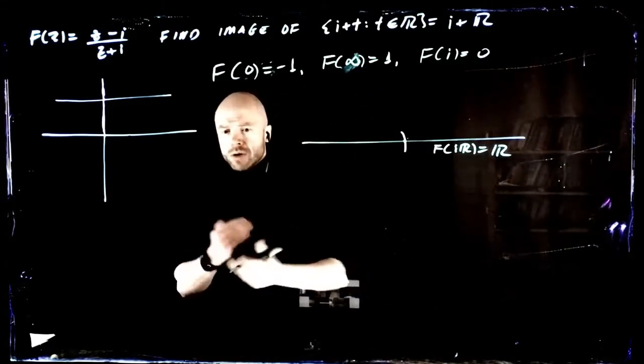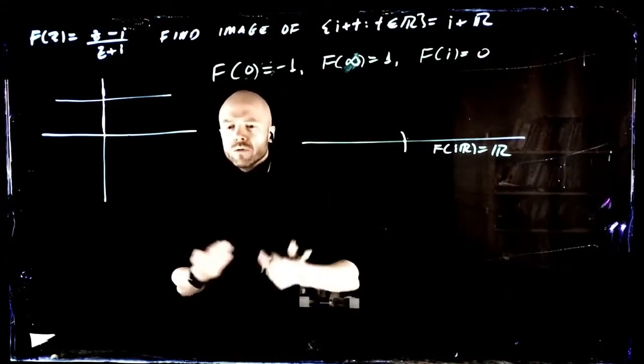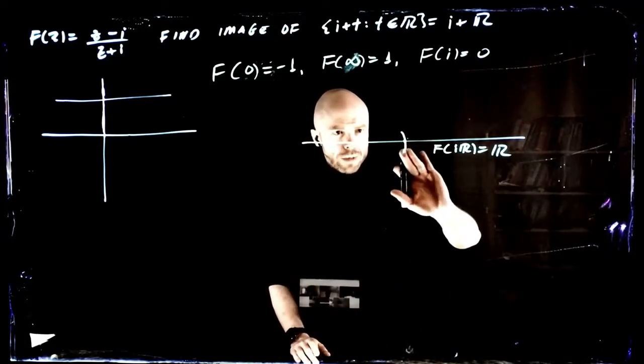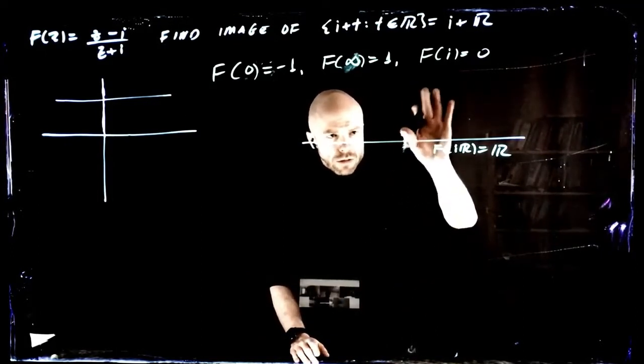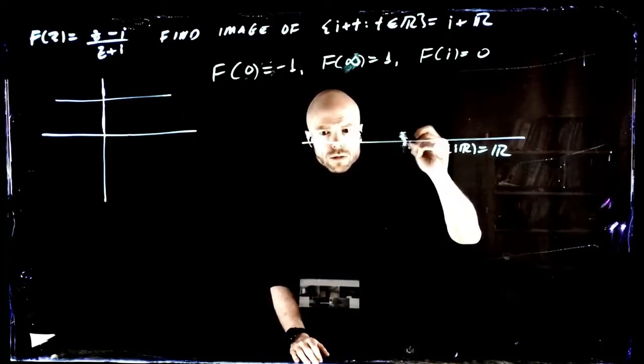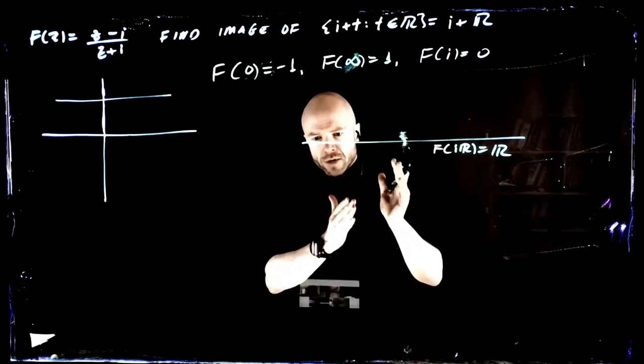If we zoom in and see where this point is mapped to, wherever it is, it has to cross perpendicularly. So if it crosses perpendicularly, what do you expect about the circle?